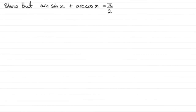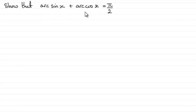Hi. Now, I've got an example here, the third in my series on inverse trig functions. You might like to try it. If you've watched the other videos, you might have got some idea of how to tackle problems like this. We've got to show that arc sine x plus arc cos x equals pi upon 2.